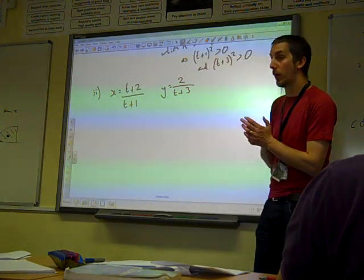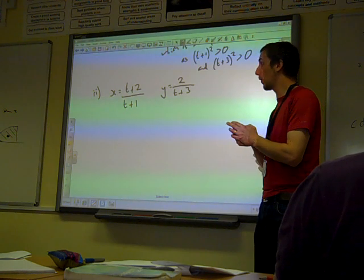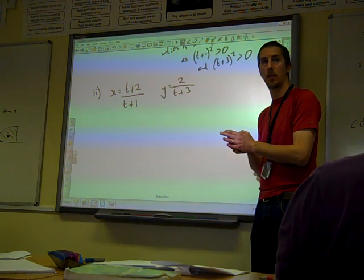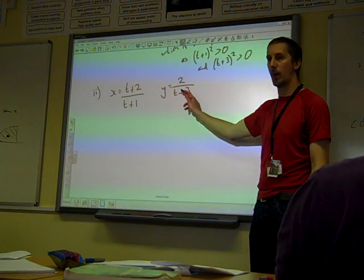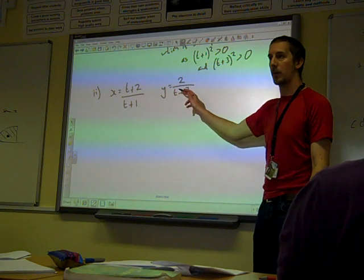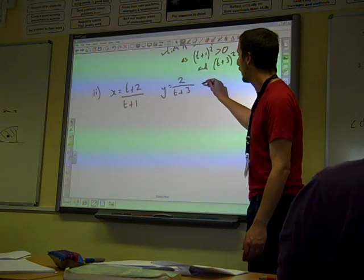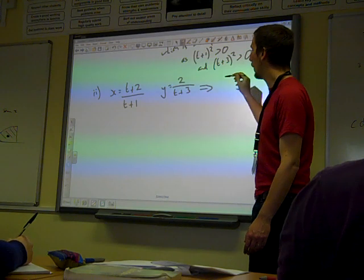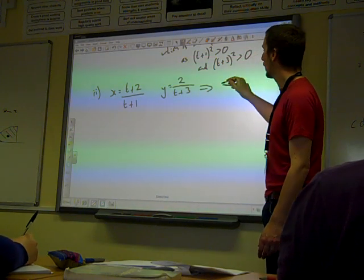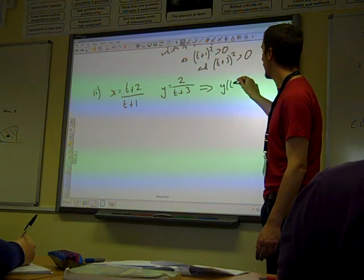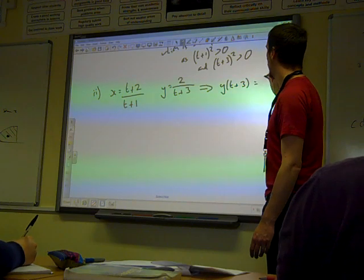Or we could take the y equation and get t equals from that. I think it looks like it might be easier to start with to get t equals from the y equation. So let's work on that with that equation. So if we rearranged it, we'd get y times t plus 3 equals 2.